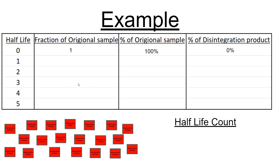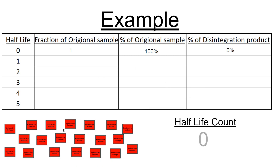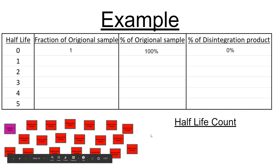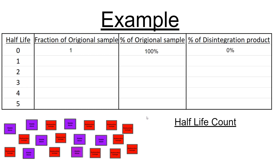Here's an example. We have half-lives, fraction of original sample, percent of original sample, and percent of the product. At half-life count zero, we have 100% of the original radioactive isotopes and 0% disintegration product. As we slowly decay the radioactive isotopes into stable atoms or disintegration products, the ratio changes. At half-life count one, half of the radioactive isotopes are now disintegration products — the fraction is one-half, 50% original radioactive isotope remains, and 50% are products.